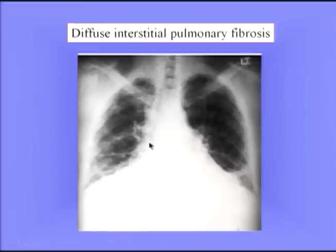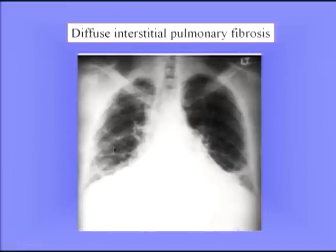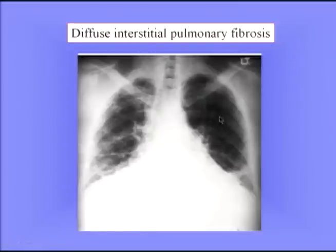Here's a radiograph of diffuse interstitial pulmonary fibrosis. The lungs are small, the diaphragms have been pulled up somewhat, and the chest seems to be pulled in on one side with rather oblique ribs. There are clear changes in the lung fields with some shadowing. If you look very carefully, there is also a diffuse shadowing of small spots throughout both lung fields — that's typical of diffuse interstitial pulmonary fibrosis.